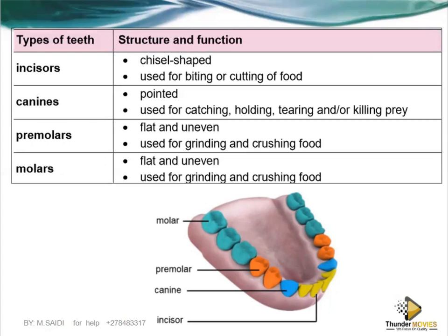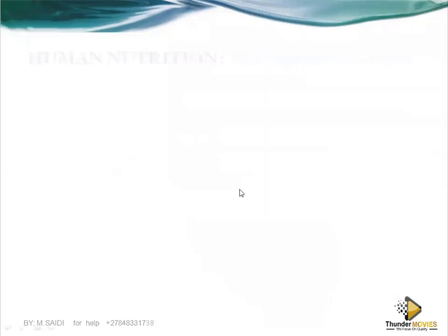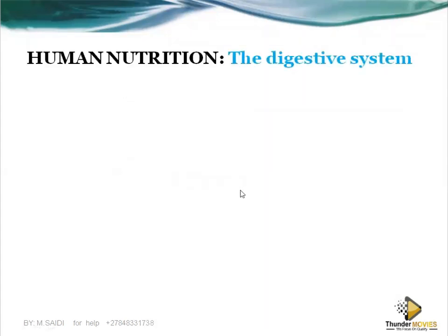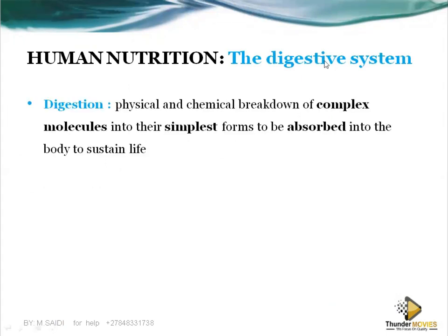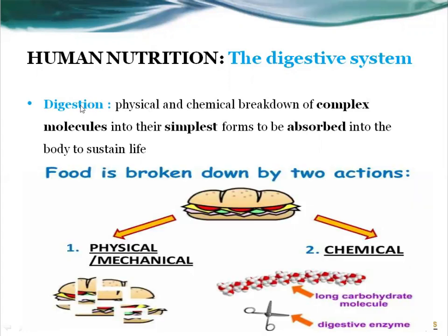You cannot have all your teeth at once — you have to reach a specific age before you can have all the teeth in your mouth. The arrangement of teeth helps in identifying what kind of organism it is and what kind of food it feeds on. When we talk about human nutrition, it requires a digestive system so that food can travel through it, the important parts are absorbed into the blood, and the undigested parts are removed from the body.